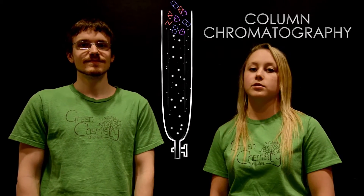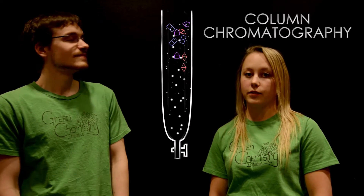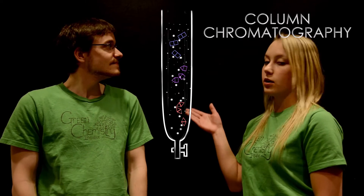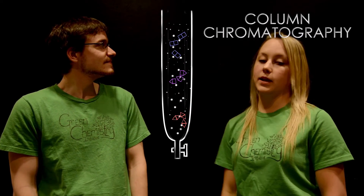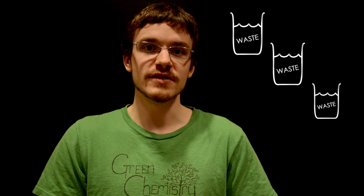A common technique used to separate and isolate compounds in a mixture is column chromatography, where the mixture is passed through the solid phase of a column using a solvent. As the mixture travels down the column, the compounds separate because they travel at different rates. Though column chromatography works well for separations, a large amount of solvent is used in the process.